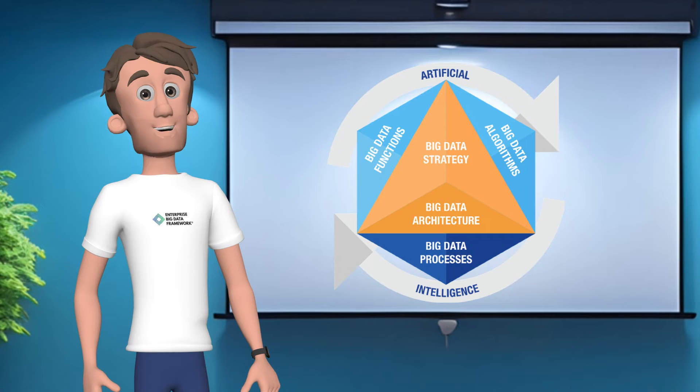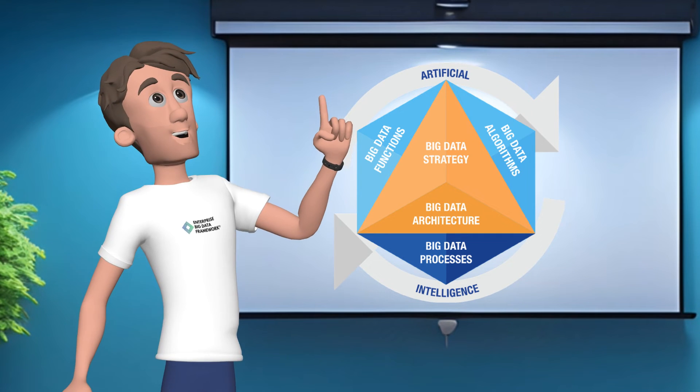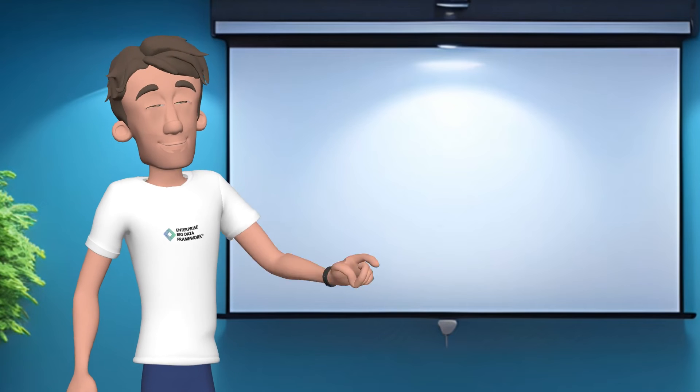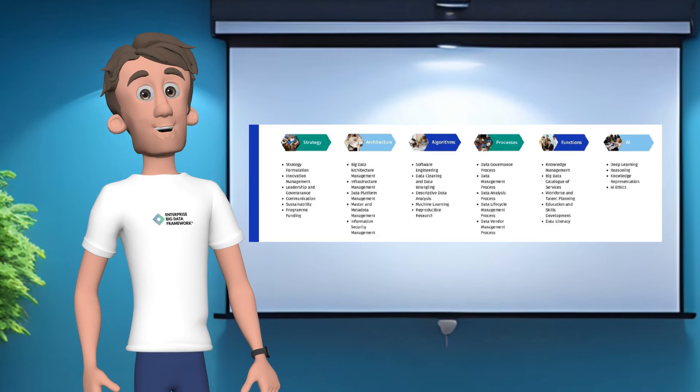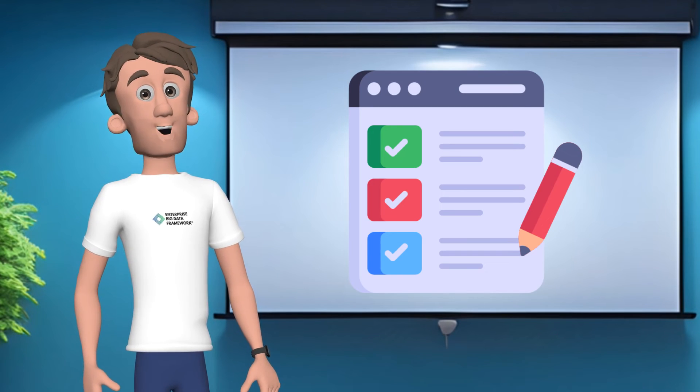So these are the six main capabilities of the enterprise big data framework. But you might wonder, is that all? The answer is obviously no, and the framework can be further subdivided into 30 smaller micro capabilities, as you can see right over here. Each of these capabilities is measurable, and we have developed a survey of 180 questions so you can measure your organization's data capabilities yourself. You can check out the survey on the big data framework website.